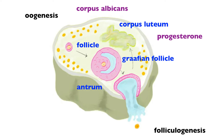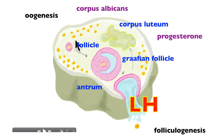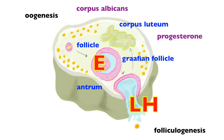Ovulation is the result of a huge spike in luteinizing hormone (LH), which is released from the anterior pituitary gland along with FSH. There is also a spike in estrogen, but it is the dramatic spike in LH that causes the release of the egg from the ovary. As the follicle develops during the follicular phase, it releases more and more estrogen — so estrogen increases gradually during folliculogenesis.